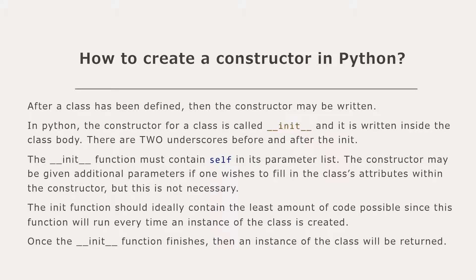After the class has been defined and you have a couple of attributes, then the constructor may be written. The constructor for a class in Python is called the init function — that's init with two underscores before and after it. The underscores are vital. The init function must contain the self keyword in its parameter list, and the constructor may be given additional parameters if the programmer wishes, but it is not necessary. The parameters you give the constructor should be values that affect the attributes.